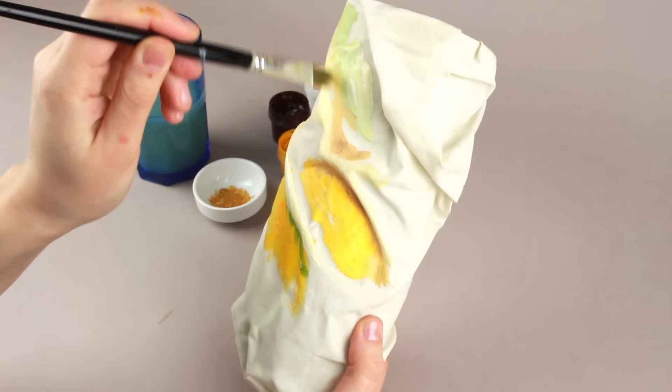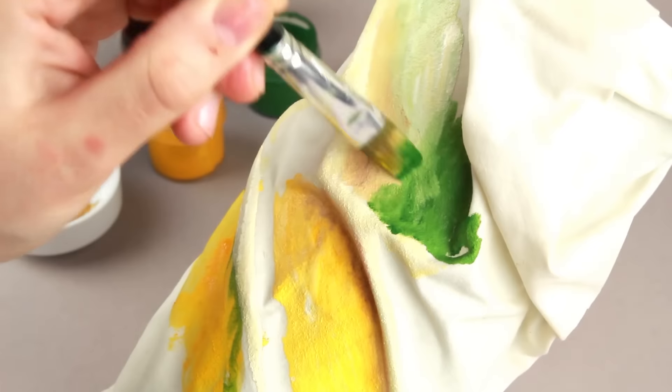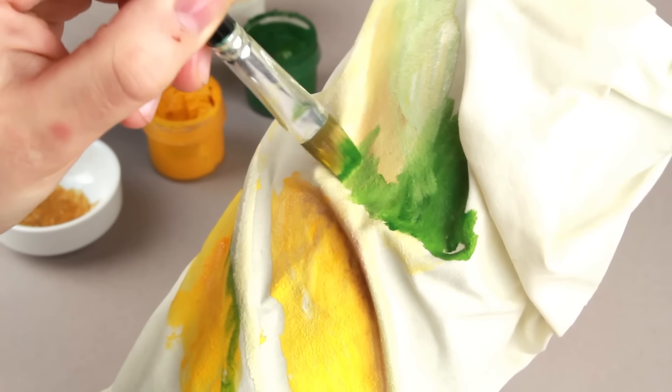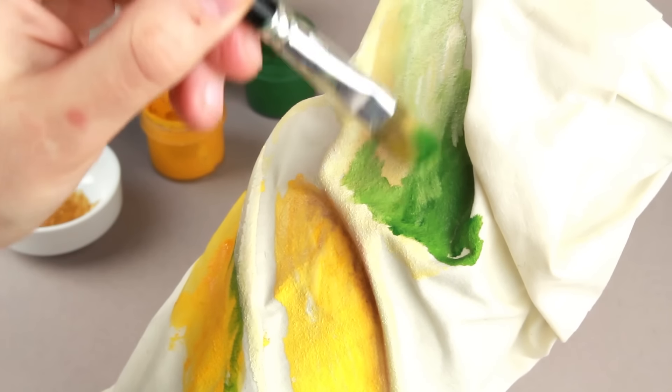You can use green to darken the hollows, as well as brown. Mix different colors to follow the fold shape and make the fabric relief more intricate.